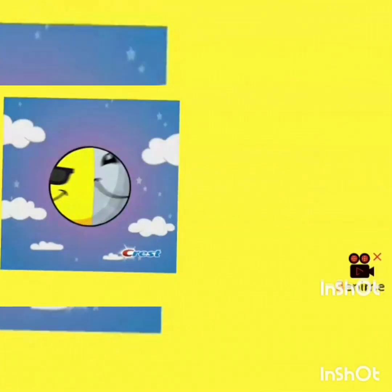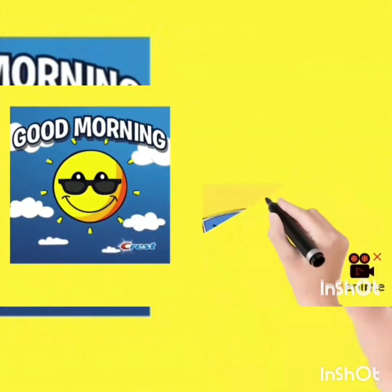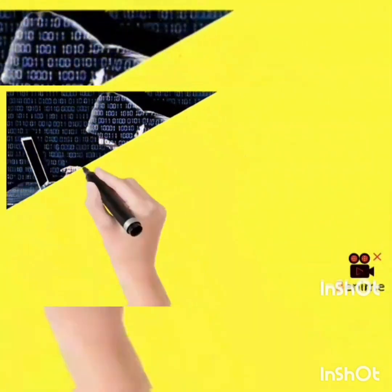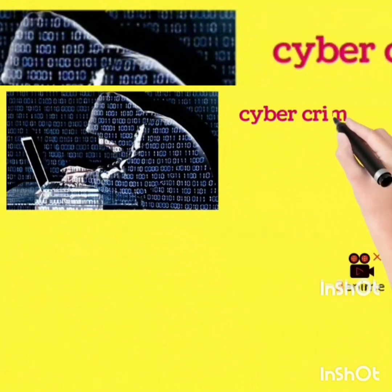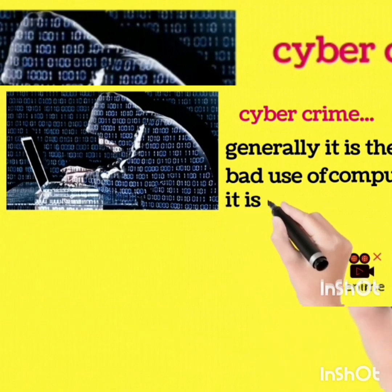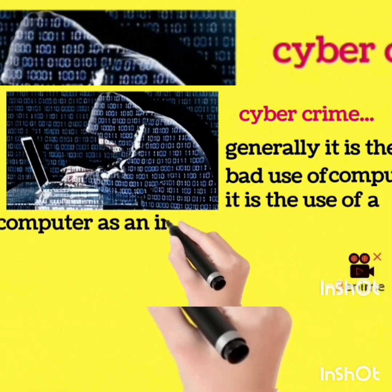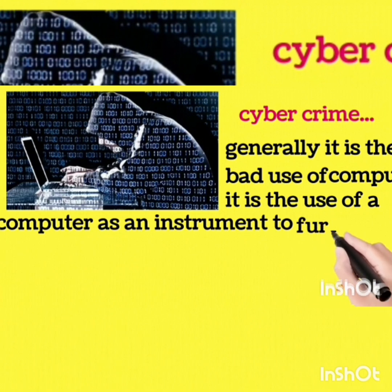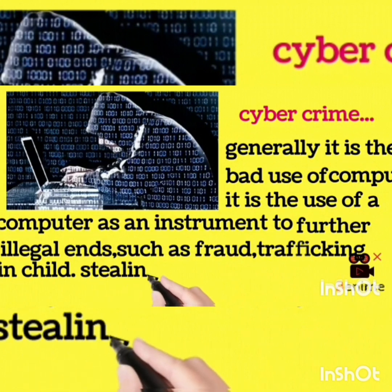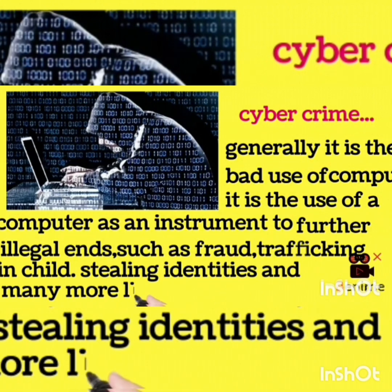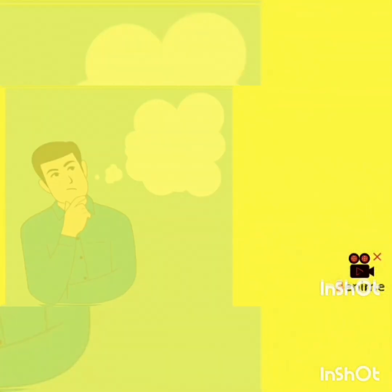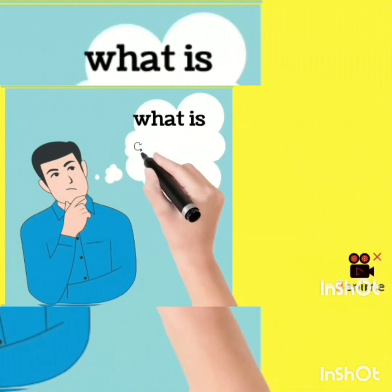Good morning everyone. Today I'm going to tell you about cyber safety and security. Cybercrime is the bad use of a computer — it is the use of a computer as an instrument for illegal activities such as fraud, trafficking in children, stealing identities, and many more. Now the question comes: what is cyber security and safety?